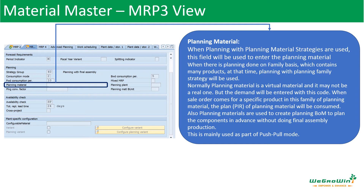This works along with the planning bill of material. We will create a planning BOM for the toothpaste, as discussed in session 22 when we covered the ATO strategy. This is mainly used for a push-pull mode: based on the planning material's BOM, all raw materials are purchased and kept in stock. Then based on actual orders coming for individual SKUs like TP1, TP2, and TP3, the packaging materials are procured. So there is a push for raw materials and a pull for finishing the products.